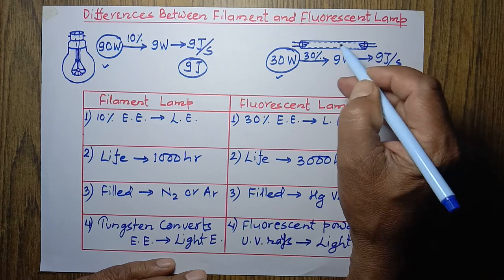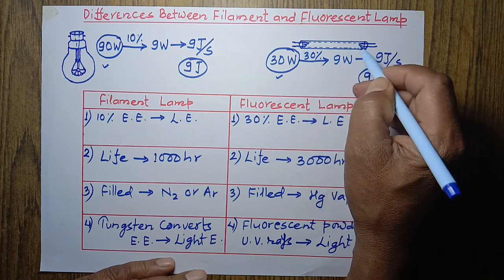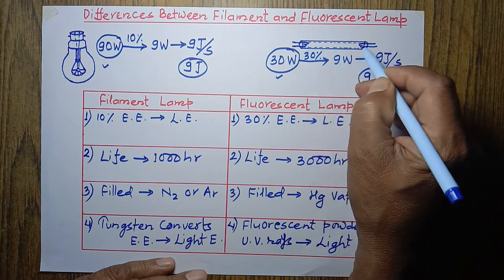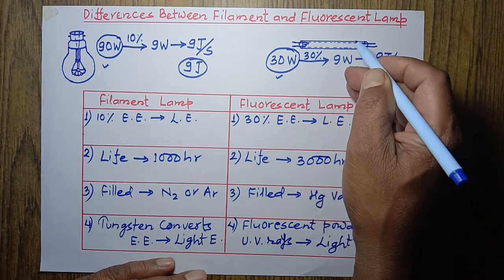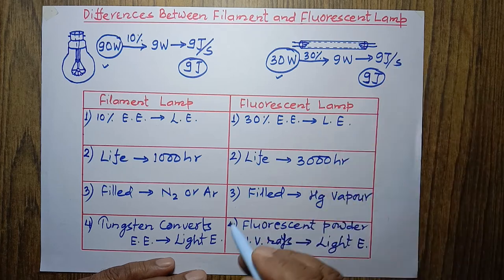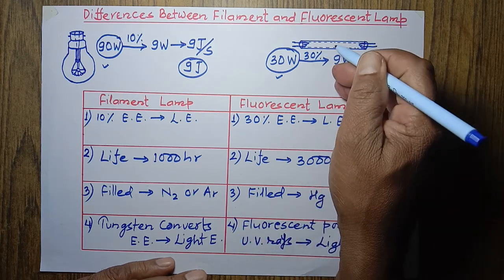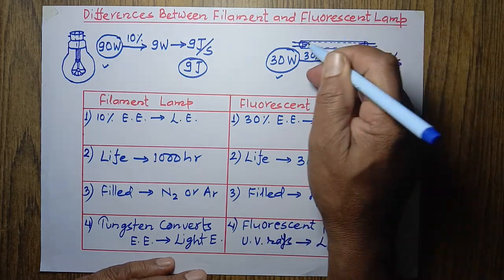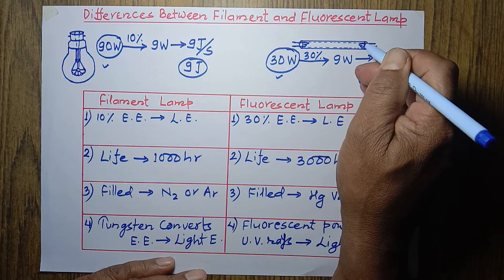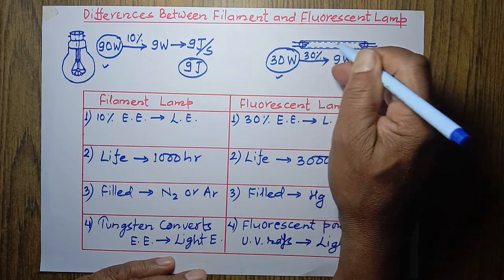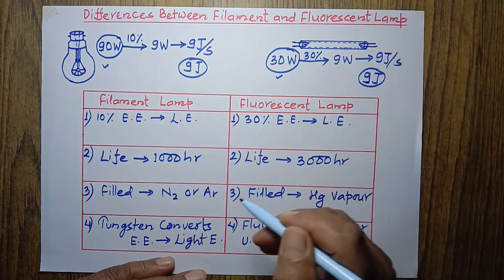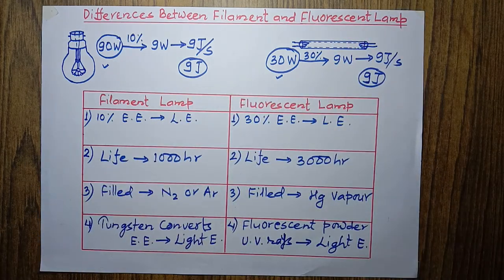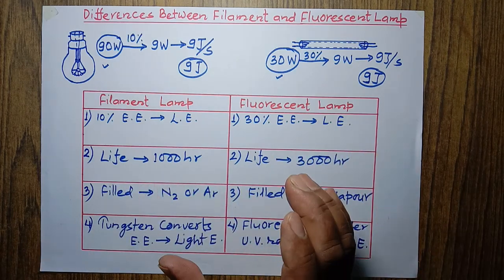Here is how it works: the electrical energy supplied to the fluorescent lamp passes through the mercury vapour. When electrons collide with the mercury vapour, ultraviolet rays are produced — so electrical energy is first converted into ultraviolet rays. Then, when these ultraviolet rays fall on the fluorescent powder coated on the inner wall, the fluorescent powder converts them into light energy. These are the basic differences between the filament lamp and the fluorescent lamp.